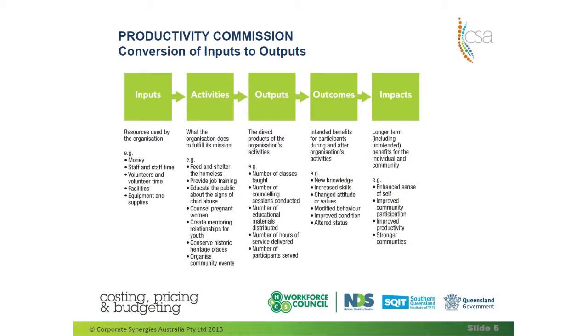What the Productivity Commission report suggests however, is that we now need to start to look at outcomes and our impacts. The outcomes are the benefits for the participants during and after the organisational activity. And in the longer term, the impacts are not only for our organisation and the individual client, but also for the community as a whole. In the past we equated cost of service delivery with resources needed to achieve outputs, but in the future we need to think about costs to achieve our outcomes and impacts — and recognise that this is not often contributed by the government sector.